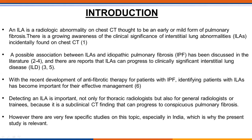In introduction, interstitial lung abnormality is a radiologic abnormality on chest CT. It is thought to be an early and mild form of pulmonary fibrosis. There is a growing awareness of the clinical significance of interstitial lung abnormalities incidentally found on chest CT. A possible association between interstitial lung abnormalities and idiopathic pulmonary fibrosis has been found in the literature, and there are reports that interstitial lung abnormalities can progress to clinically significant interstitial lung disease.